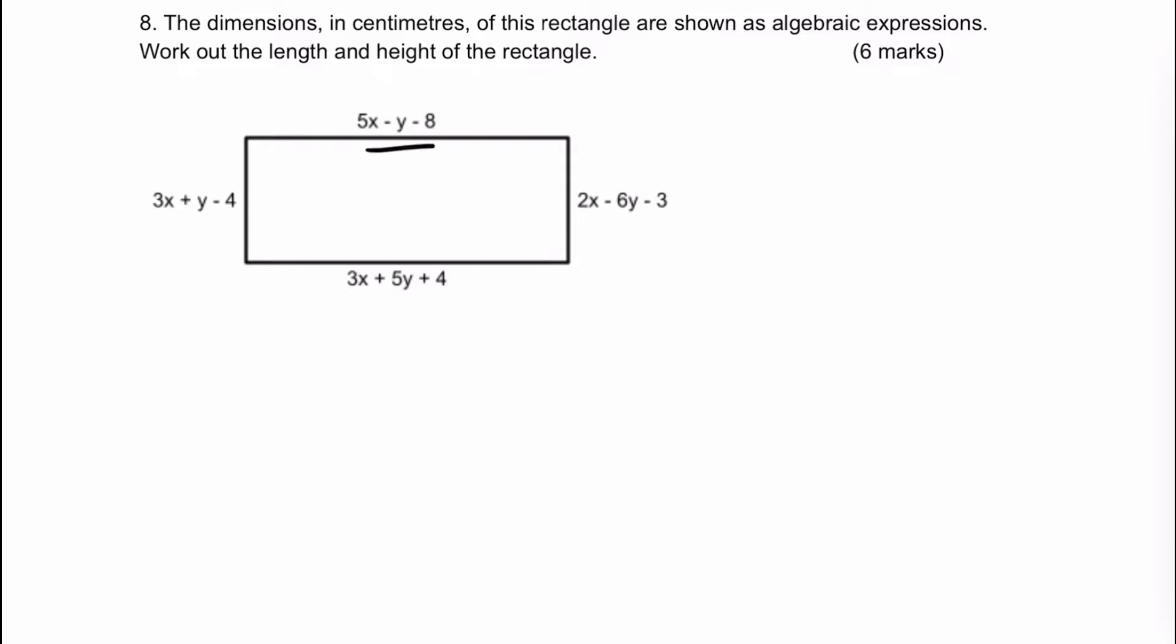then this and this are equal to each other, it allows us to create effectively an equation. So I can say 5x minus y minus 8 is equal to 3x plus 5y plus 4. And then I'm going to put this in a form that I'm going to find useful to be able to use simultaneous equations with.